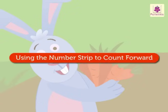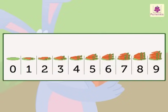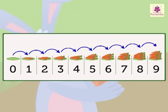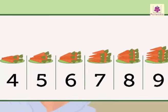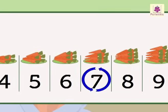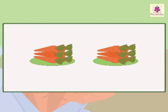We can use the number strip to count forward. When we count forward by ones, the next number that we get is always one more than the previous number. Number seven is the next number after six. So, one more than six is seven.